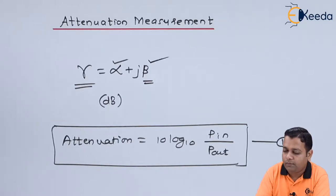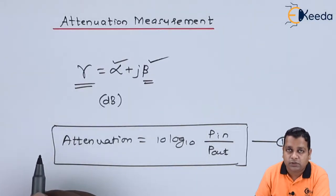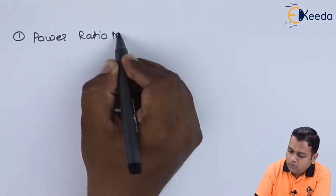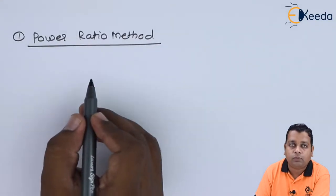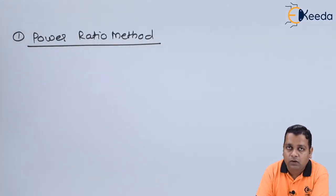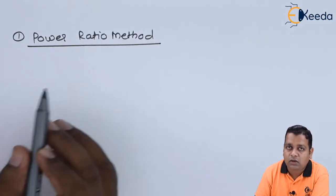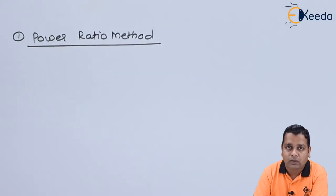There are two methods for attenuation measurement: the power ratio method and the RF substitution method. We shall discuss them one by one. In the power ratio method, the device under test is first excluded from the assembly and then included, and the corresponding power measurements are compared to calculate attenuation.